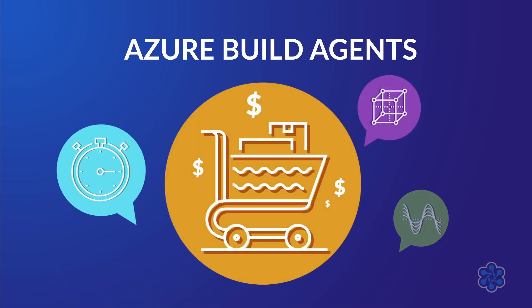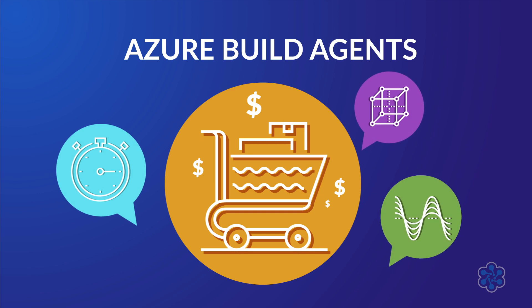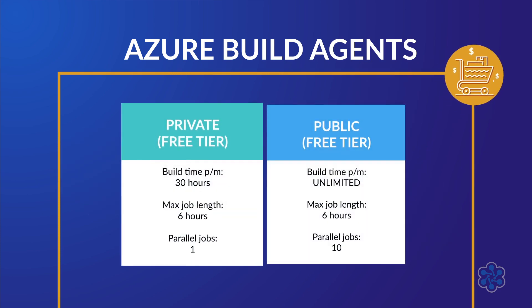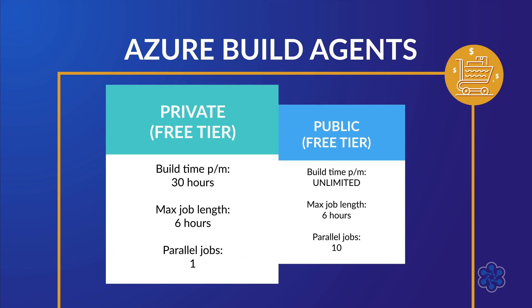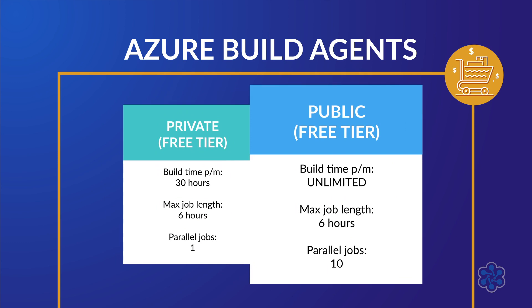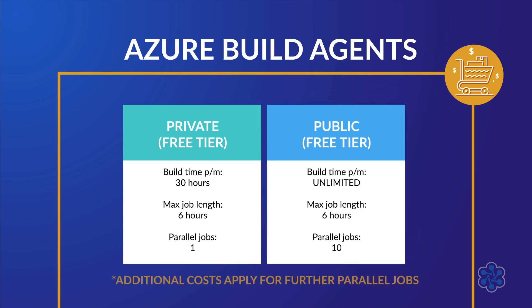In this topic on build agents, it's important to discuss pricing and cost, since one of the main determining factors of the cost of Azure Pipelines is the length of time and concurrency of running our build jobs. Pricing is affected by the visibility of your project. The free tier for private projects is limited to 1800 minutes or 30 hours of build time per month, with a maximum job length of six hours, and can only run a single job at a time. For public projects, the build minutes restriction is removed — the job length is still six hours — and the free tier gives you 10 parallel jobs. Once you go above the free tier, you will need to pay for each parallel job. Buying the first parallel job for a private project simply removes the build minutes restriction; you will need to buy a second parallel job if you want to run two parallel jobs at the same time.